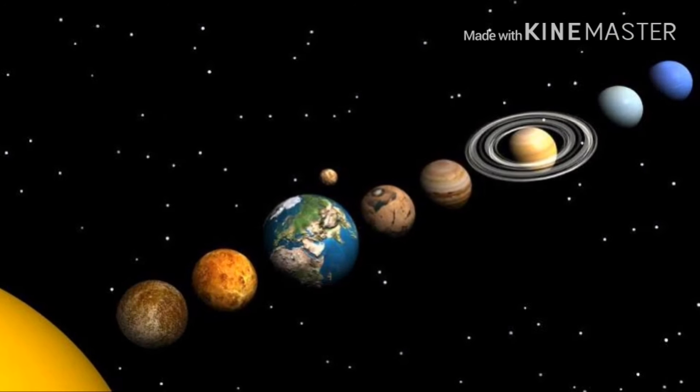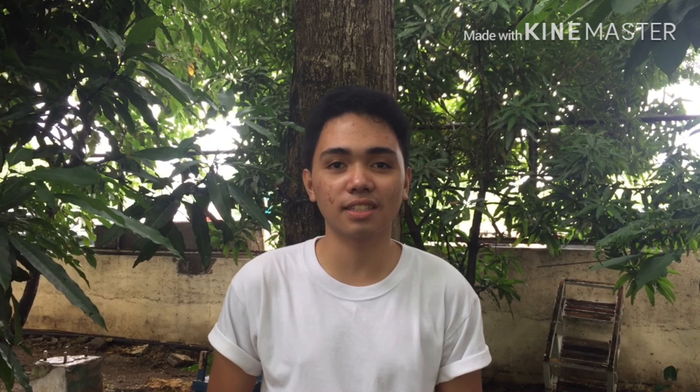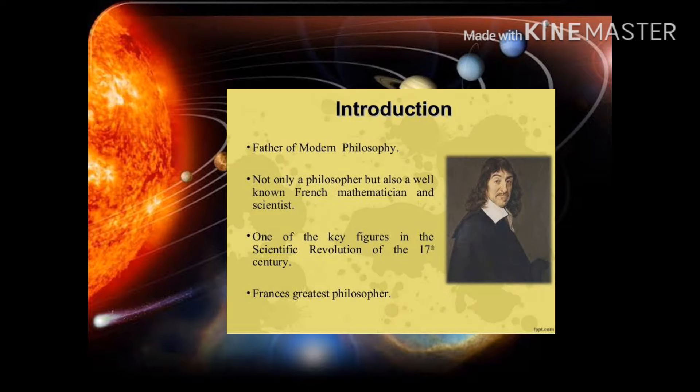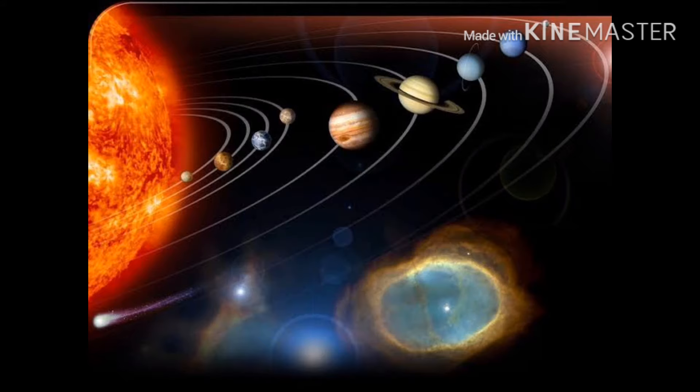The Five Origins of the Solar System. First, the theory of the vortices. The theory of vortices was by Rene Descartes of 1600. The space was entirely filled with matter in various states whirling about the sun like a vortex.